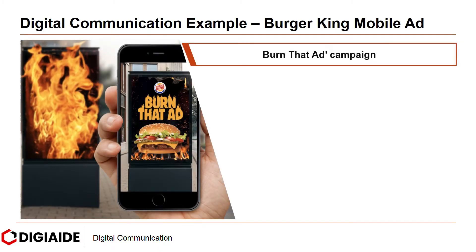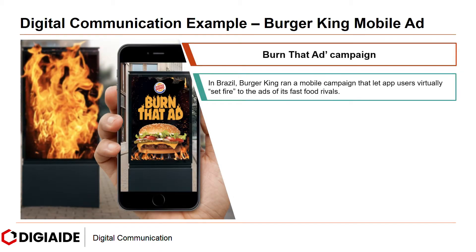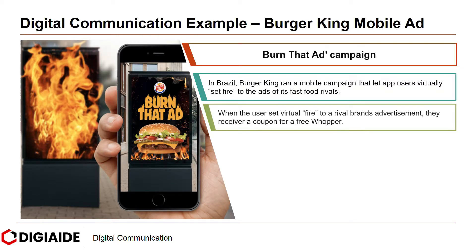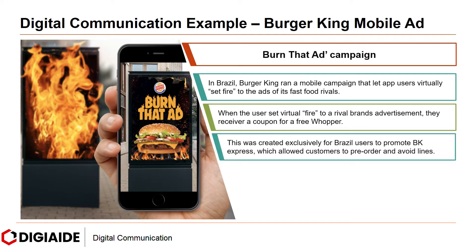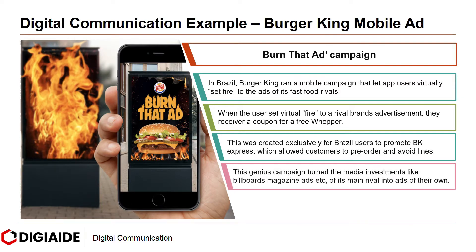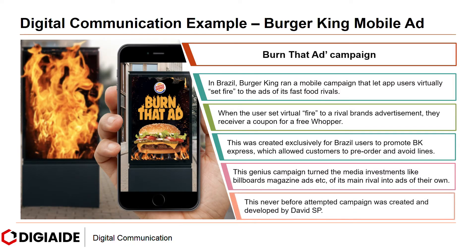Next, Burger King's Burn That Ad campaign. In Brazil, Burger King ran a mobile campaign that let app users virtually set fire to the ads of its fast food rivals. When the user set virtual fire to a rival brand's advertisements, they received a coupon for a free Whopper. This was created exclusively for Brazil users to promote Burger King Express, which allowed customers to pre-order and avoid lines. This genius campaign turned the media investments like billboards of its main rivals into ads of their own. This never-before-attempted campaign was created and developed by David SP.